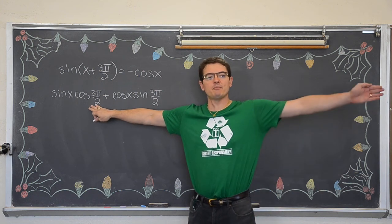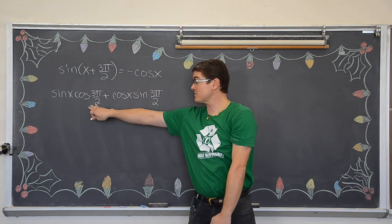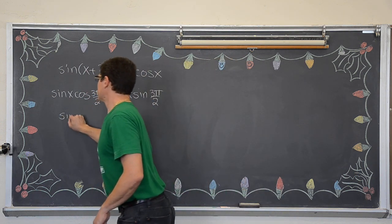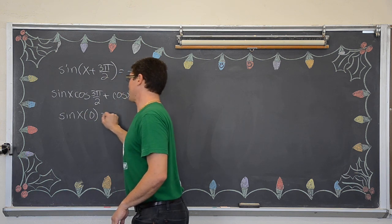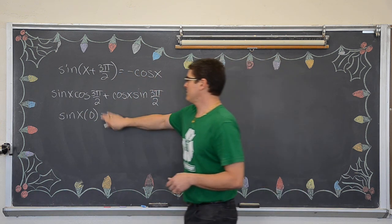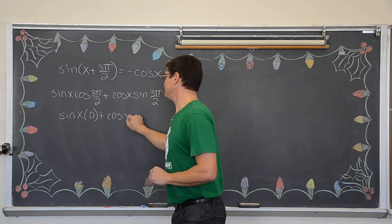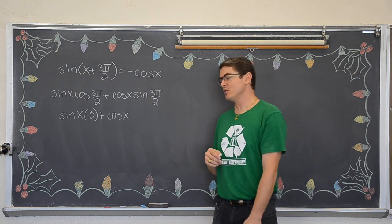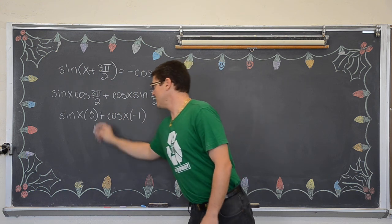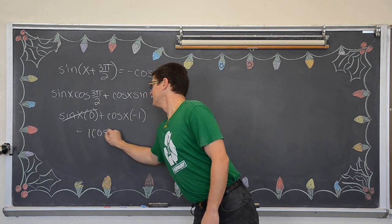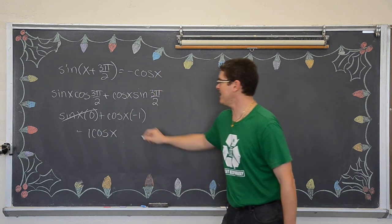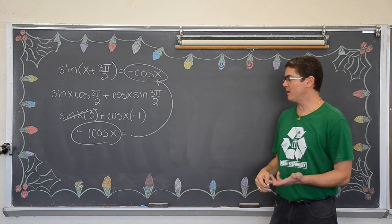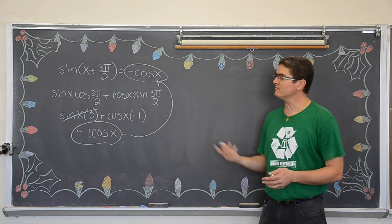The cosine of 3π/2 — remember that is at 270 degrees — is going to be zero. So this is sine of x times zero, which completely cancels out, and that is plus cosine of x times the sine of 3π/2. The sine of 3π/2, down at 270 degrees, is negative 1, and negative 1 times cosine x is negative cosine x. So there is our match, and we have proven that identity.